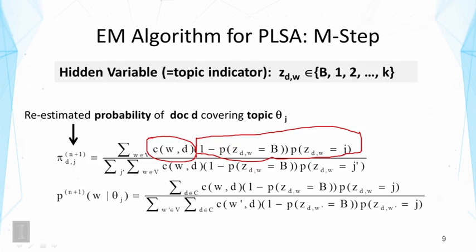This tells us how likely this word is actually from theta sub j. And when we multiply them together, we get the discounted count that's allocated for topical theta sub j. And when we normalize this over all the topics, we get the distribution over all the topics to indicate the coverage.